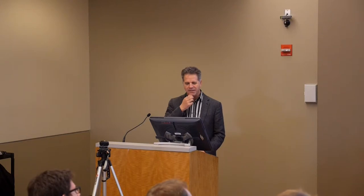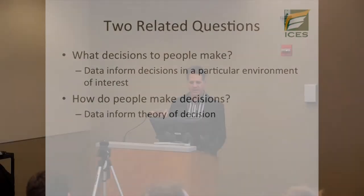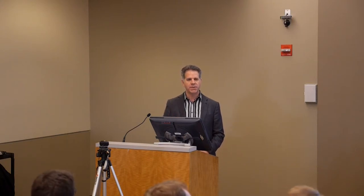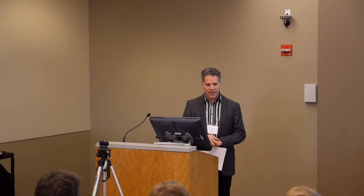There are broadly speaking two related questions we're asking when we do experiments. The first is: what decisions do people make? We generate data about decisions in a particular environment of interest. The second is: how do people make those decisions? These are separate questions. What decisions do people make can be very important — for example, how do we promote charitable giving in particular types of fundraising drives?